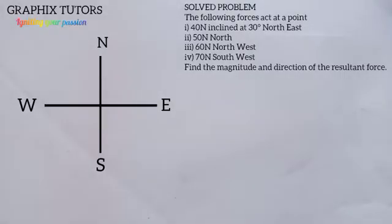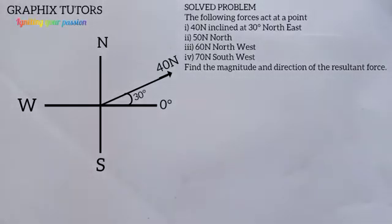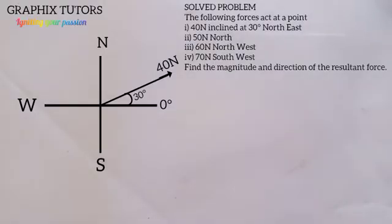The first force is 40 Newton inclined at 30 degrees north east. It falls between the north and east directions. We move in an anti-clockwise manner in the direction of the quadrant. East is zero degrees, so moving 30 degrees toward the north gives us the position of this first force — 30 degrees north east means starting from east and going toward north.